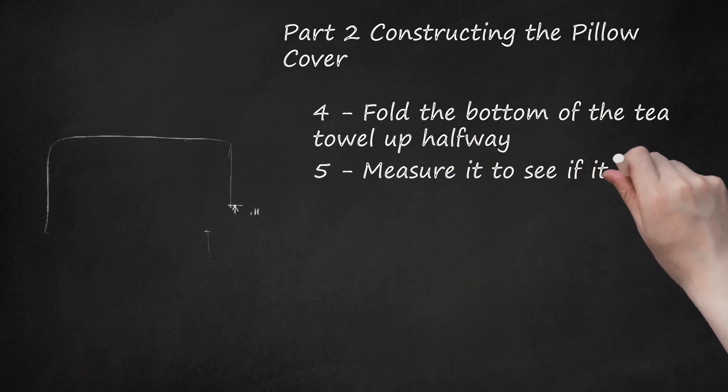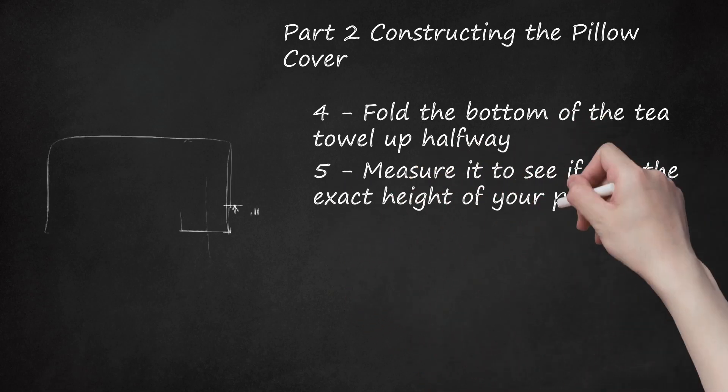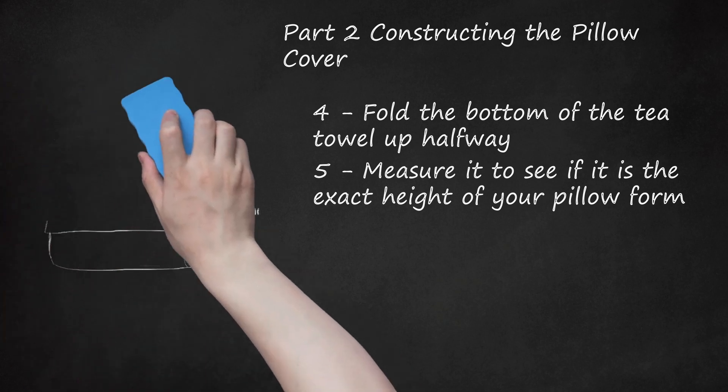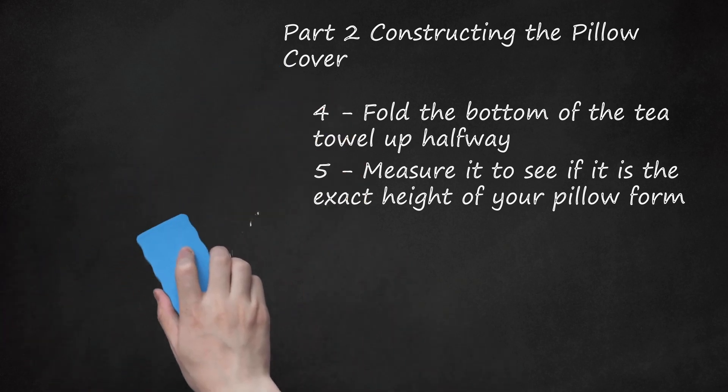Step 5: Measure it to see if it is the exact height of your pillow form. Adjust as necessary. Allow one side to overlap the other side by at least 4 inches so that it doesn't pucker when turned right side out and wrapped around the pillow. Measure from the center, the right, and the left to ensure your seam is even.